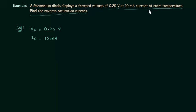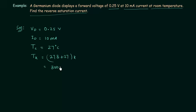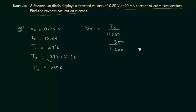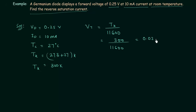All these values are given at room temperature, so temperature equals 27 degrees Celsius. Converting to Kelvin: Tk = 273 + 27 = 300 Kelvin. Now we will calculate Vt, the thermal voltage, because it will be used to calculate the reverse saturation current. Vt = Tk / 11600 = 300 / 11600, which gives us 0.026 volts.